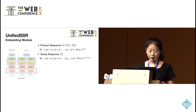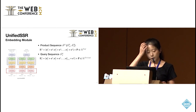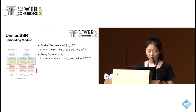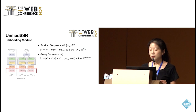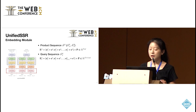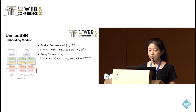The first module is the embedding module, where we embed the product sequence and the query sequence. For the product sequence embedding, we use product embeddings, user embeddings, and positional encoding. For the query sequence, we use query embeddings, user embeddings, and positional encoding. For the query embedding, we use mean pooling of all query words to construct the query embeddings. We thus obtain the sequence matrix for the product and the query.